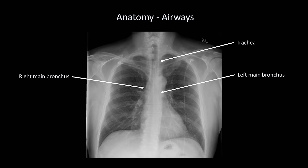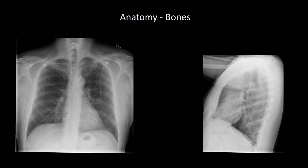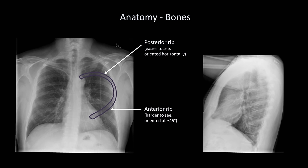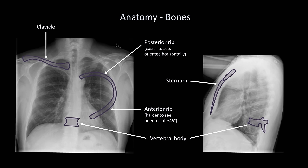I'll take the drawing away again so you can try to see the airways on your own. The next set of structures is the bones. There are four types of bones easily visualized on a PA and lateral x-ray set: ribs, which have posterior components oriented horizontally and anterior components at a 45-degree angle; the clavicles; the sternum, sometimes visible on the lateral film but often obscured by soft tissue; and the vertebral bodies, more easily visible on the lateral film but usually seen on the PA as well, provided technical quality is adequate.